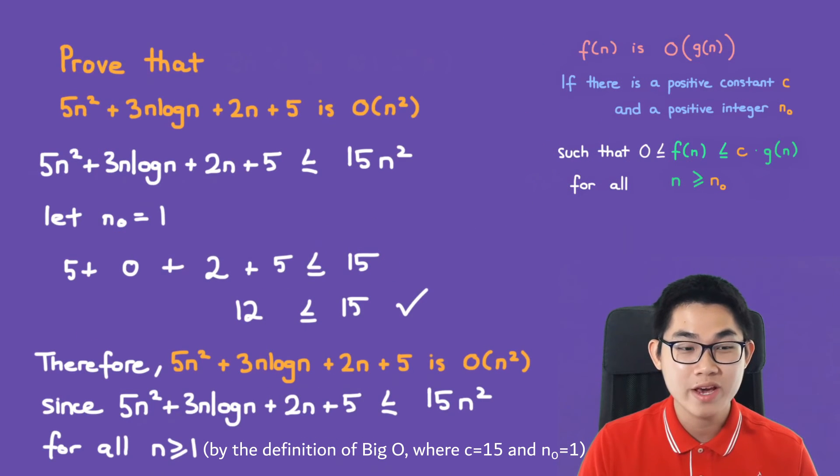By definition, we conclude that 5n squared plus 3n log n plus 2n plus 5 is indeed O(n squared). Because all of this is less than or equal to 15n squared for all n is greater than or equal to 1.